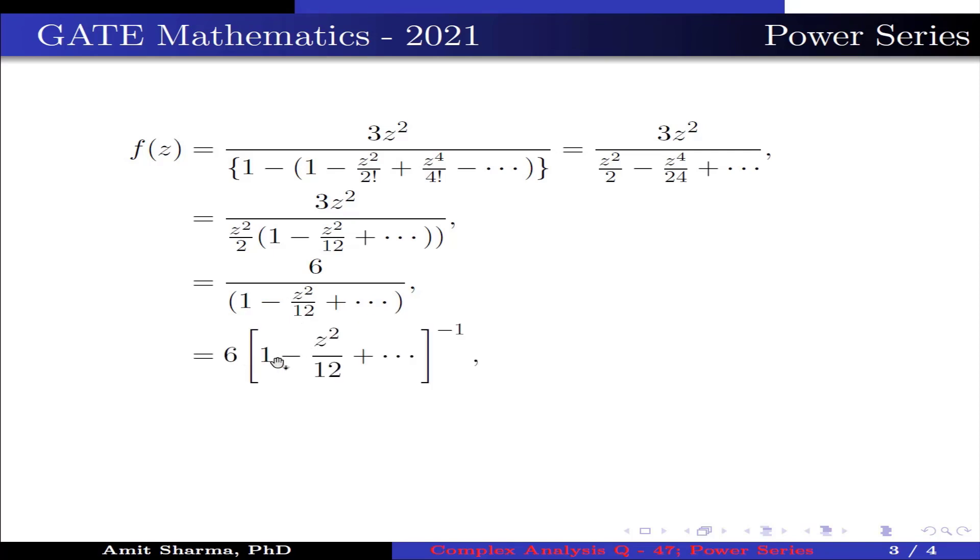Which can be written as 6(1 - z²/12 + ...)⁻¹, or 6(1 + z²/12 + ...) using the binomial expansion. This simplifies to 6 + z²/2 + ...